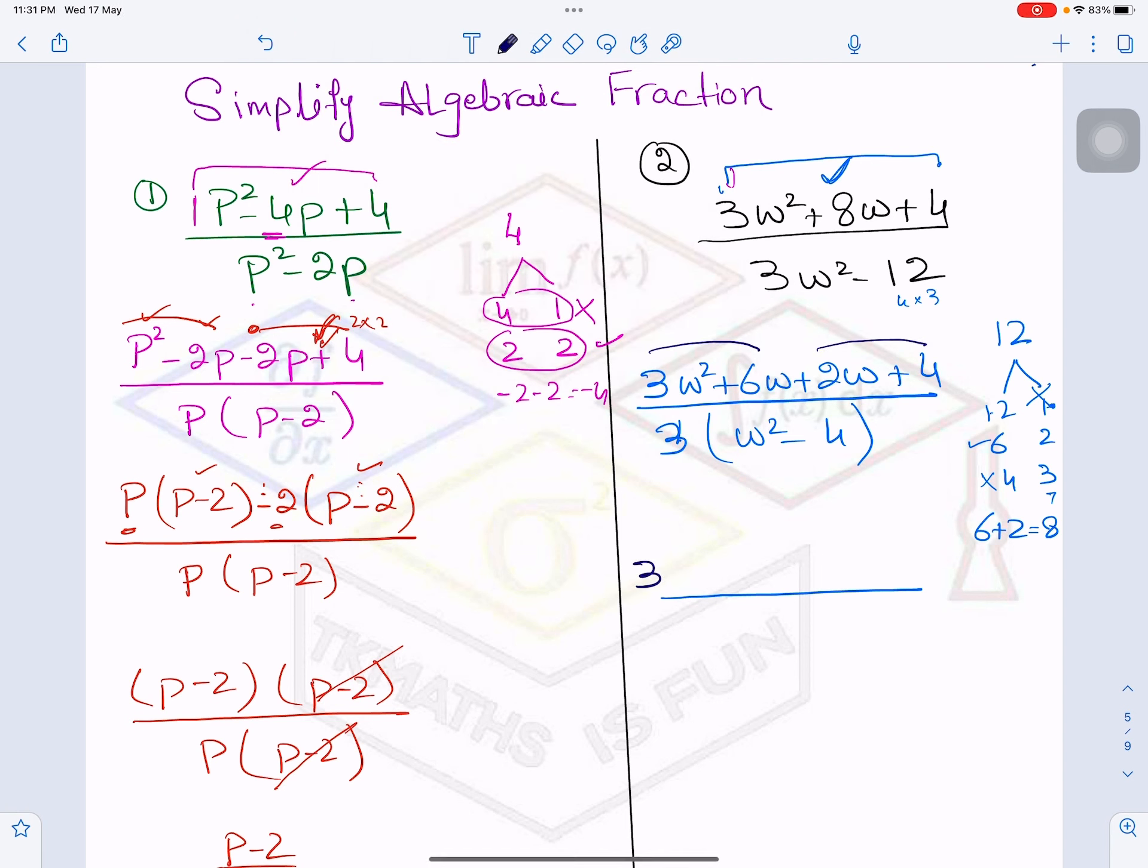What is left? W plus 2. From second term, plus 2 is common, so 2(W+2).